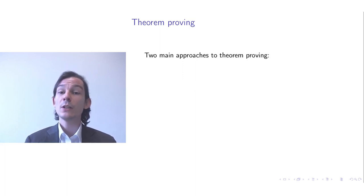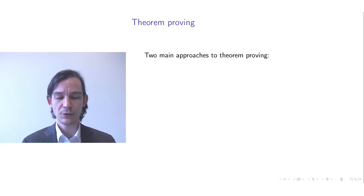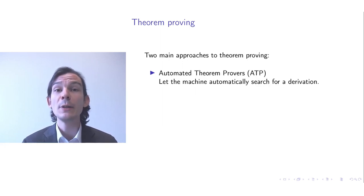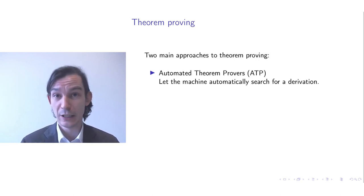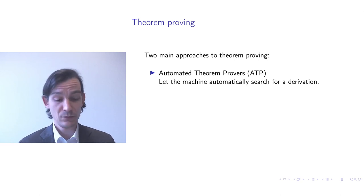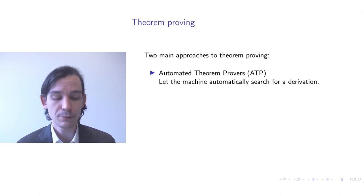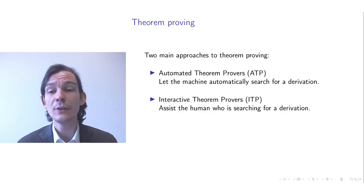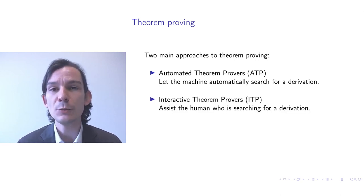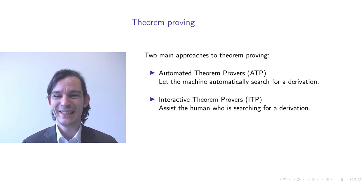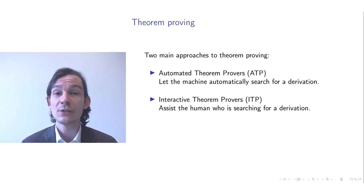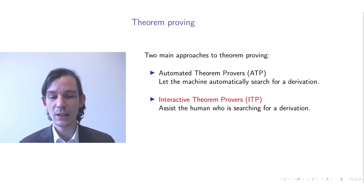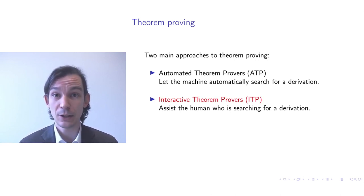In Theorem Proving there are two main approaches as you have seen in the previous videos. There is the approach of Automated Theorem Proving, in which you let the machine automatically search for a derivation of two formulas. But in the case of Interactive Theorem Proving, it is the human that constructs a proof, and then the Interactive Theorem Prover, also called a proof assistant, assists the human user to search such a proof. In this video we'll focus on Interactive Theorem Proving.